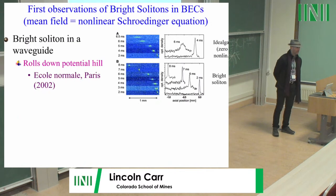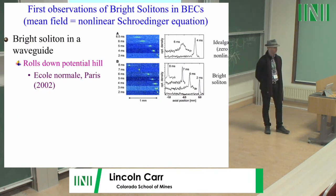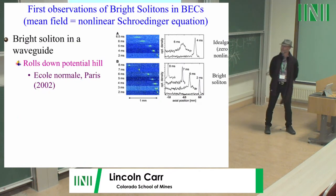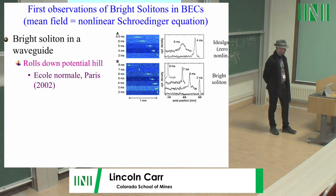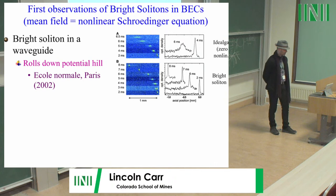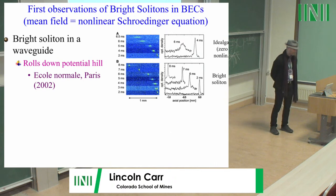At the end of this talk, I plan to suggest some open mathematical problems for the audience. To remind you, bright solitons were first observed in 2002 in Paris — I was a postdoc in this group at the time, it was very exciting — and shortly thereafter, bright soliton trains were observed at Rice.